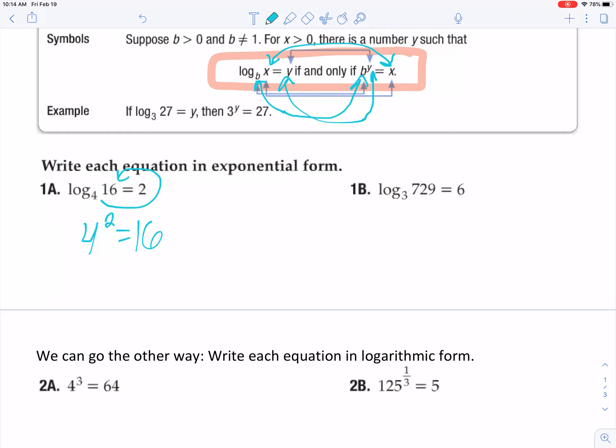Again, to rewrite that, this would be 3 to the 6th equals 729. Now that is bigger than what you will find on your powers pocket guide, but if you plug in your 3 to the 6th in your calculator, you will get 729.